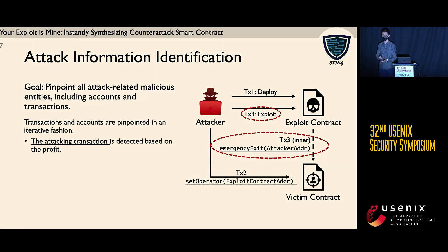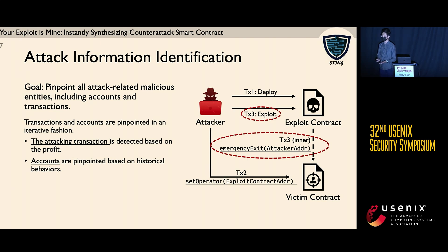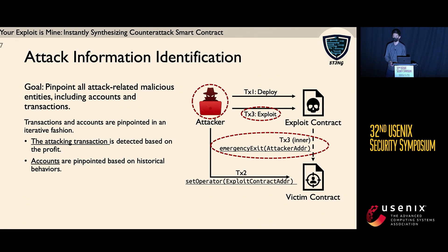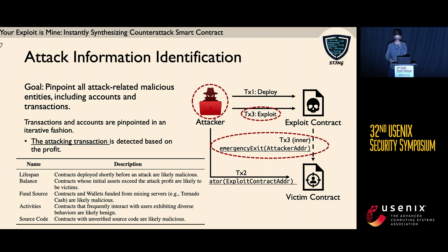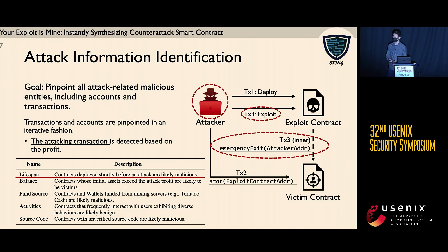After that, we investigate all accounts related to the third transaction. Accounts are pinpointed based on historical behaviors. In this case, we have three accounts: the attacker, the exploit contract, and the victim contract. It is easy to tell that the attacker is malicious because it is the message sender of the attacking transaction. However, for the exploit contract and the victim contract, it is hard to tell which one is malicious and which is benign based solely on the third transaction. To help with that, we propose a set of indicators — for example, 'life span', which is the duration between contract deployment time and the attacking time. The intuition is that attackers tend to launch the attack as soon as possible, in case another attacker jumps in.